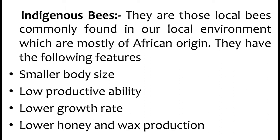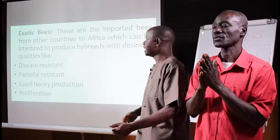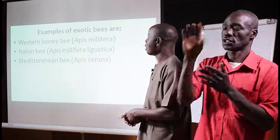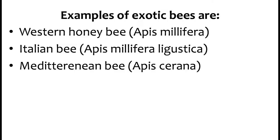The indigenous bees are the ones we commonly find in our environment. Their characteristics include: small body size, low productive ability, low growth rates, and lower honey and wax production. But the exotic or imported bees have better characteristics — they are disease resistant, parasite resistant, have good honey production and are prolific. Examples of exotic bees are the Western honey bee, Italian bee, and Mediterranean bee.